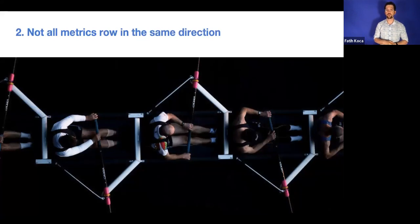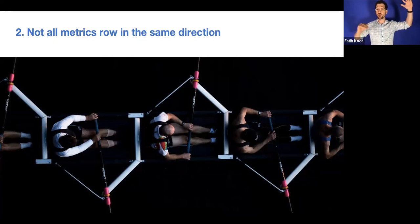Next, we have lots of metrics, but not all metrics row in the same direction. Our conversion might go up and retention might go down. What are we going to do? What KPI are we going to be basing our decision on, conversion or retention?